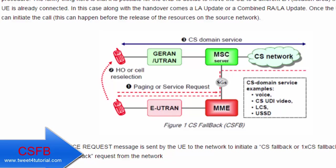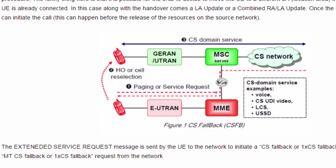The idea of combined attach is to perform the attach process for LTE and the legacy network in parallel. In the attach request message, one field is the EPS attach type, which is set to Combined EPS/IMSI attach. So the CS Fallback UE is registered with the LTE network for PS, but it is also attached to the legacy network for CS Fallback, so both registrations happen simultaneously.